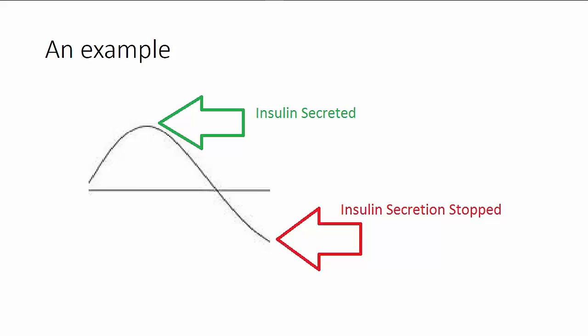Again, very simple. You need the blood glucose levels to go down, insulin is secreted, it drops the blood glucose levels. Now that you've gotten what you asked for, you stop asking. Insulin secretion is stopped.